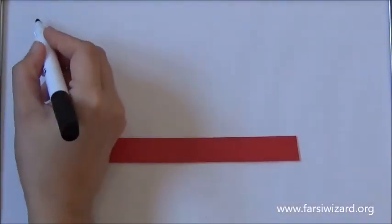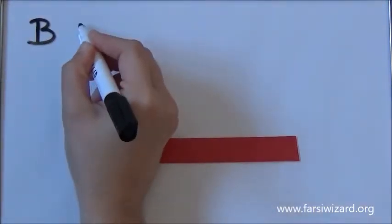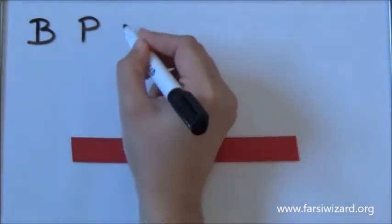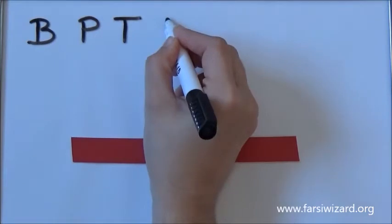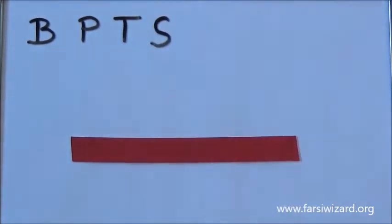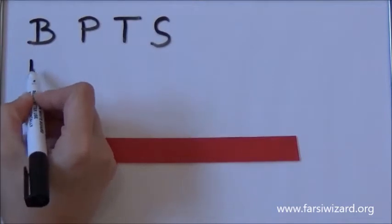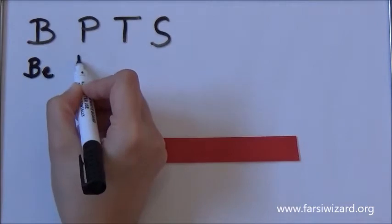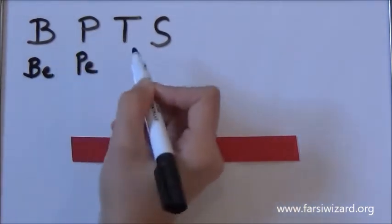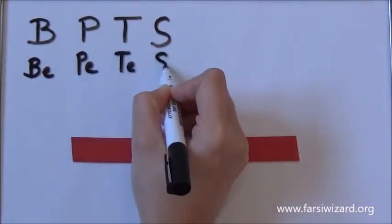The first one I'm going to teach you today is the letter B, and then we will learn the equivalent for the letter P, after that T, and at the end one of the many versions of S, because we have more than one version for that. So the equivalent of the letter B in English in Farsi would be pronounced as B. For P we have P, for T this version of T we have T, and for this particular version of S we have C.